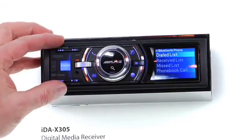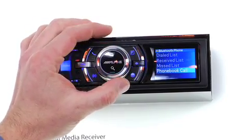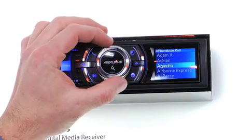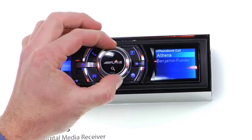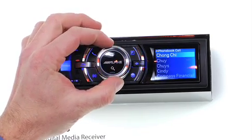That brings up your Bluetooth phone book. You can go in and choose dial list, receive list, missed calls, phone book calls. So we can go into the phone book, and we can scroll down number by number, or we can use our quick search functionality to go A, B, C, D, and quickly search through the menus.